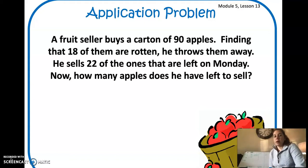So basically what this problem is saying is that a fruit seller had 90 apples and when he was looking at his apples he realized 18 of them were no good, they were bad, they were rotten, so he had to throw them away. So he had to take those 18 away first. Then he looks at his apples and he's selling the remaining of them. He only sells 22 of the remaining apples.